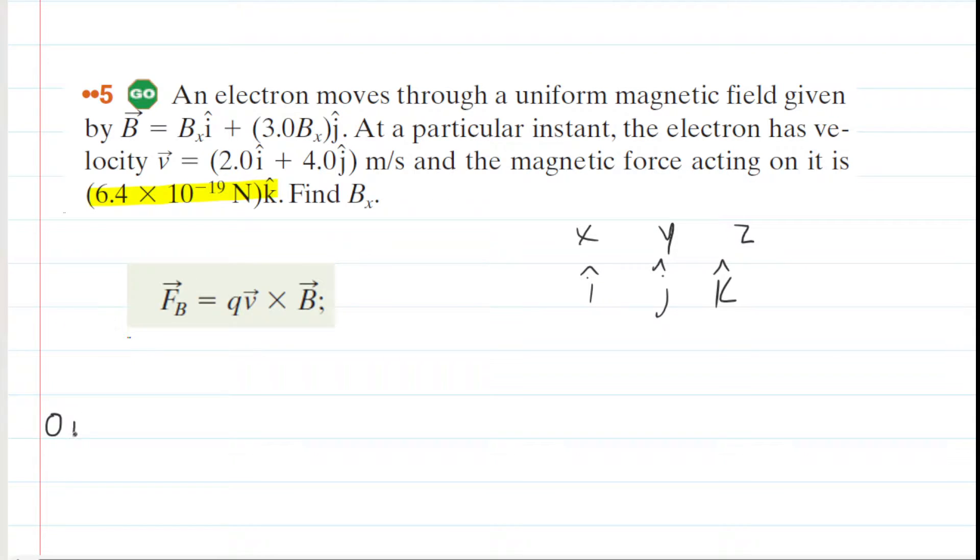So we could write that force vector as zero i-hat plus zero j-hat, and then we're going to have plus that k-hat or z component. So it's 6.4 times 10 to the negative 19. We're going to put in newtons here, and then that's going to be k-hat.